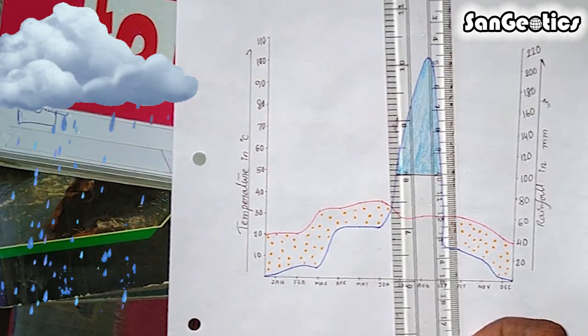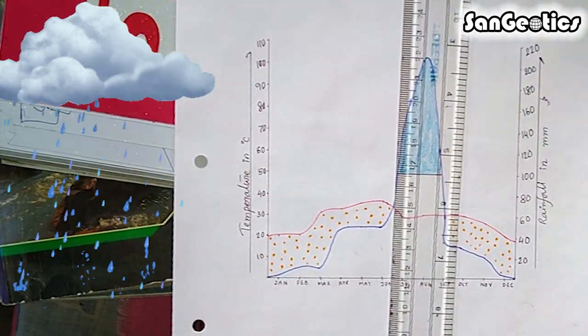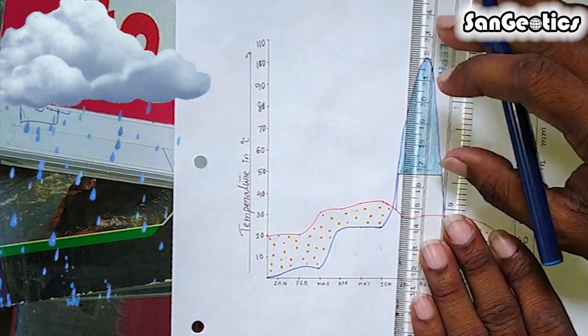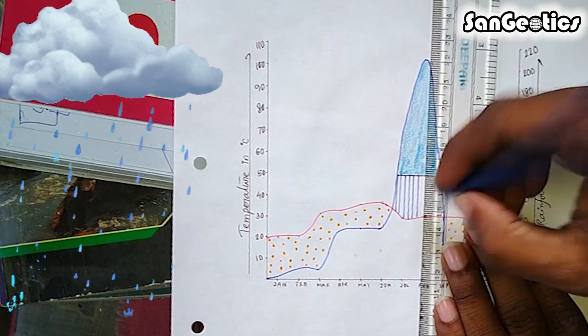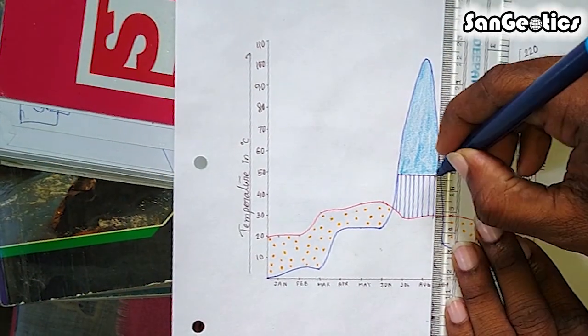When the temperature line runs below the precipitation line, there is a wet season. The area between the lines should be illustrated by filling it with vertical lines.